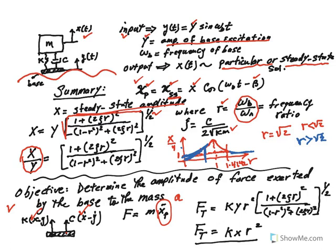You end up getting an expression. F of t is called the amplitude of the force, and that's equal to K Y r squared times this expression. Now the interesting thing is that if you take Y and multiply it by this bracket, Y times this bracket is equal to what? X.